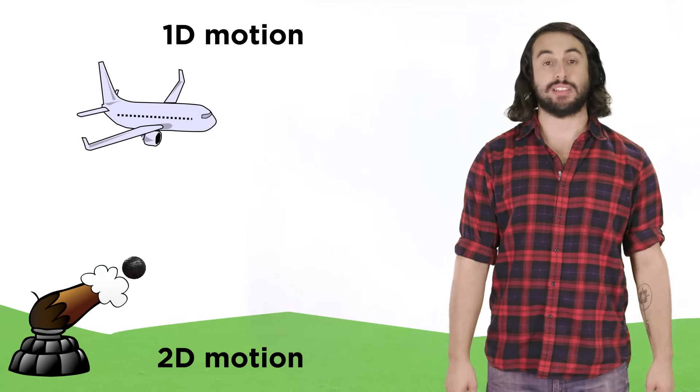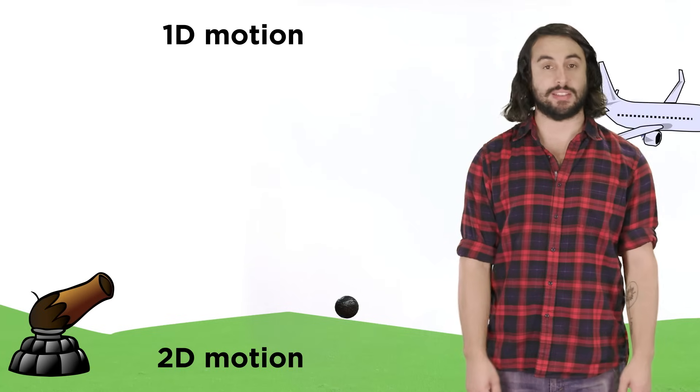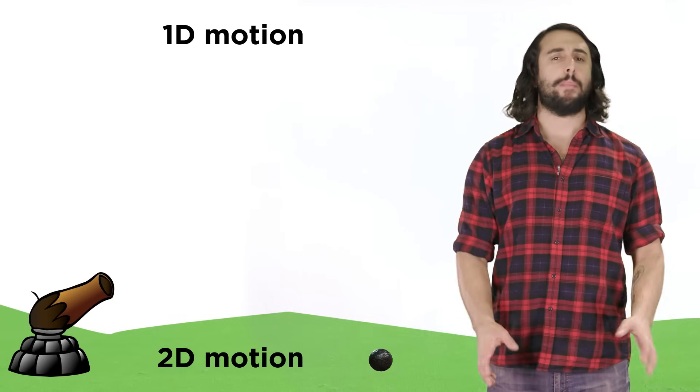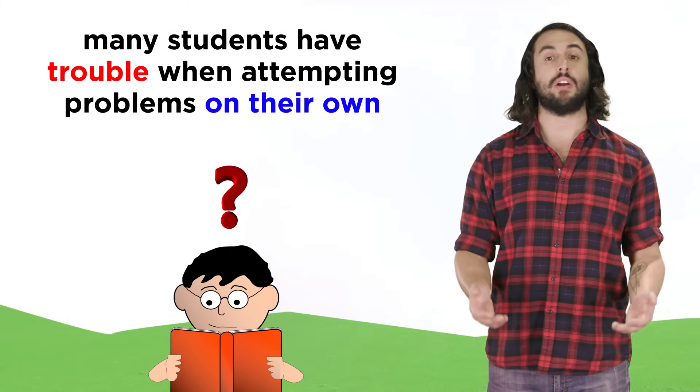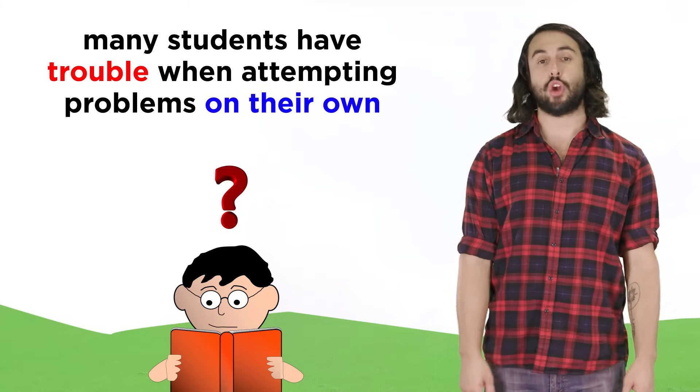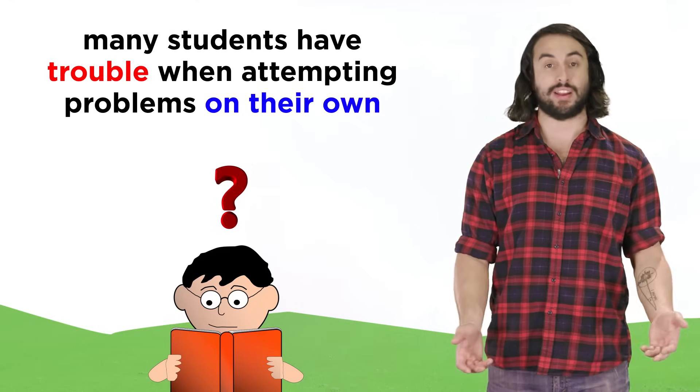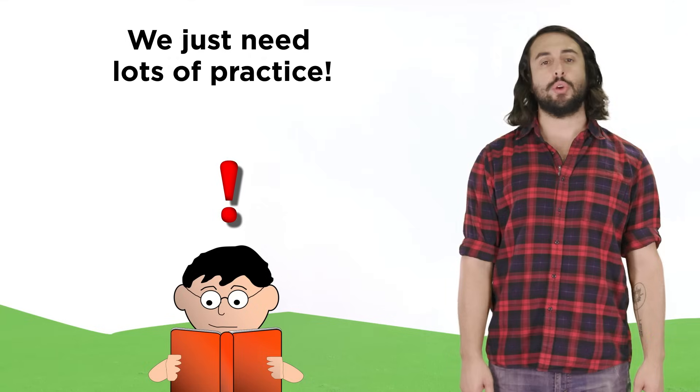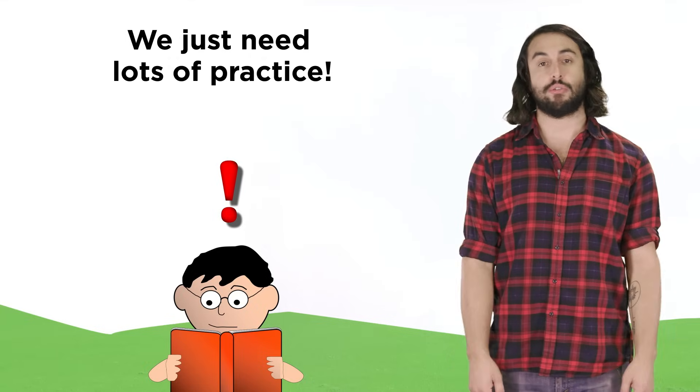We've looked at the motion of objects in one and two dimensions, and hopefully the examples we discussed made perfect sense. But many students find that they understand the examples when they are explained, but have trouble figuring out what to do on their own during homework or on a test. The solution to this is to simply practice a lot and use critical thinking skills.